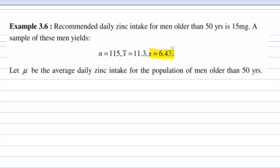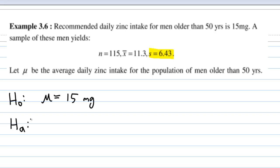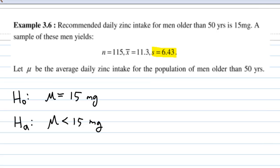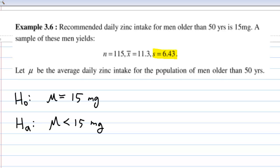Let mu be the average daily zinc intake for the population of men older than 50 years. Our null hypothesis H0 says that mu is equal to 15 mg, and we are testing this null hypothesis with alternative hypothesis HA. Since our sample mean is 11.3, we may suspect that the population mean mu is less than 15 mg. Obviously, we will reject the null hypothesis H0 if the sample mean x bar is too small.